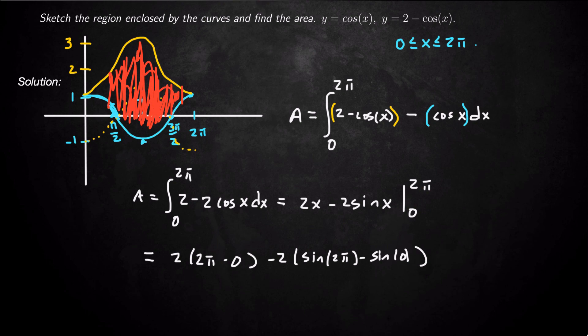Sine of 2 pi and sine of 0 are both 0, so actually all of these are 0, which is really nice. 2 times 2 pi here is just 4 pi, and that's our area for this region, 4 times pi. So that's how we do it.